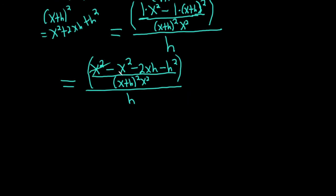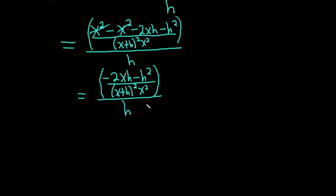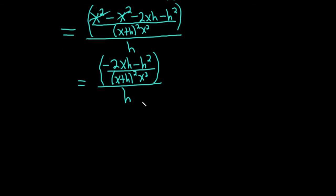These cancel. And so we get -2xh - h² over (x+h)²·x². And again, it's in parentheses, super key, all over h. I know it's tough because these complex fractions are always a little bit tough. It's even hard to write. My equal sign is always like levitating up here. So you just have to be really, really careful.